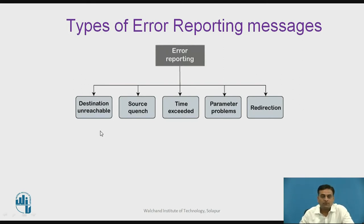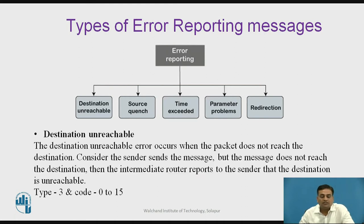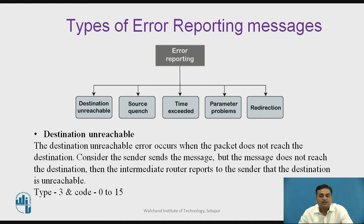The first type of error reporting message is Destination Unreachable. This error occurs when a packet does not reach the destination. The intermediate router reports to the sender that the destination is unreachable. For a Destination Unreachable message, the type field in the ICMP header contains value 3, and the code is 0 to 15.